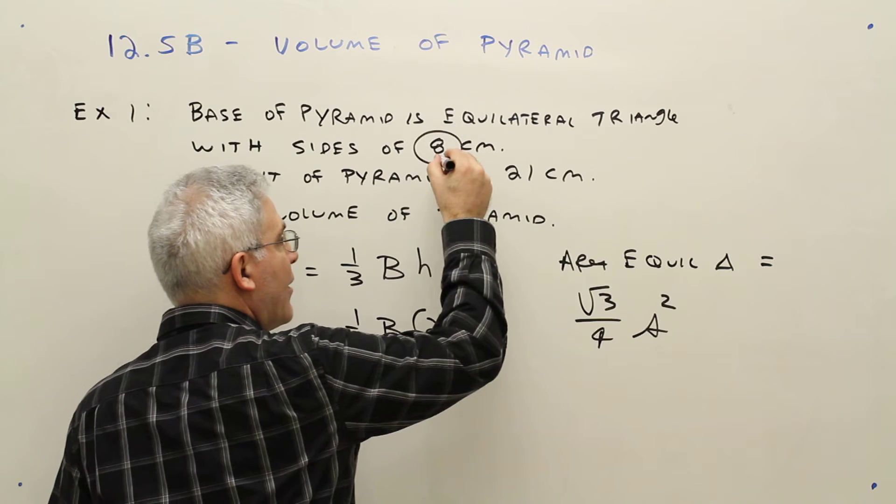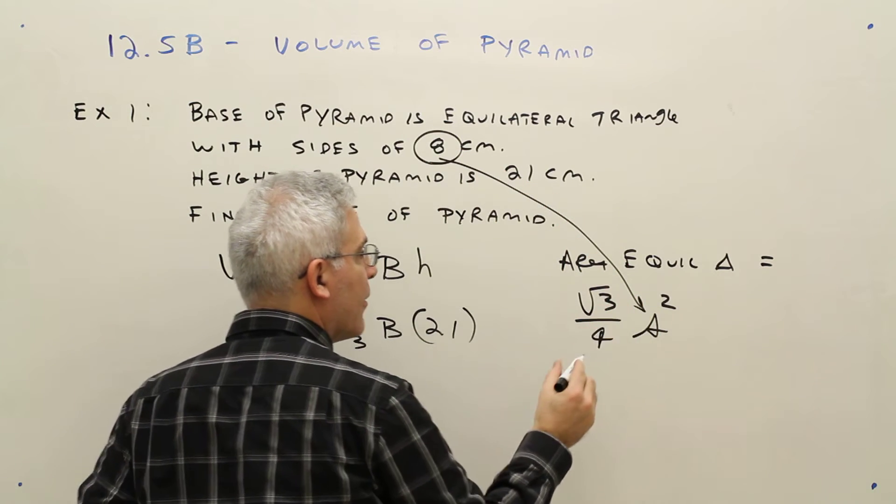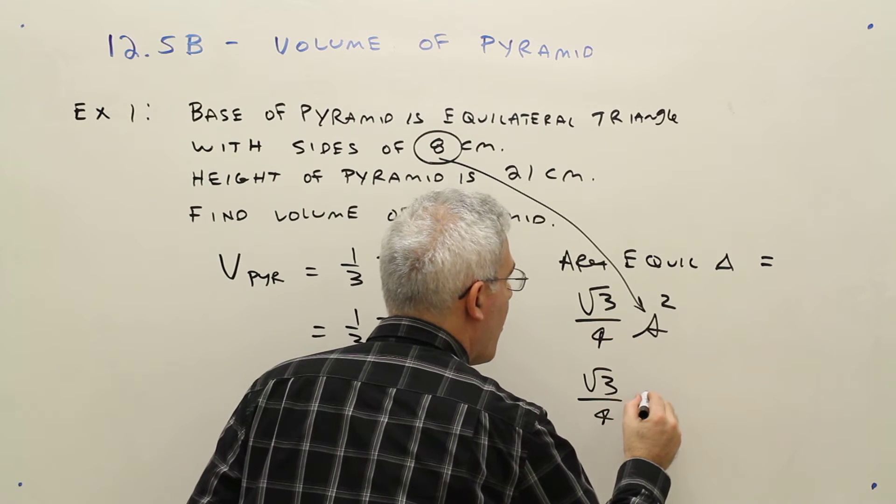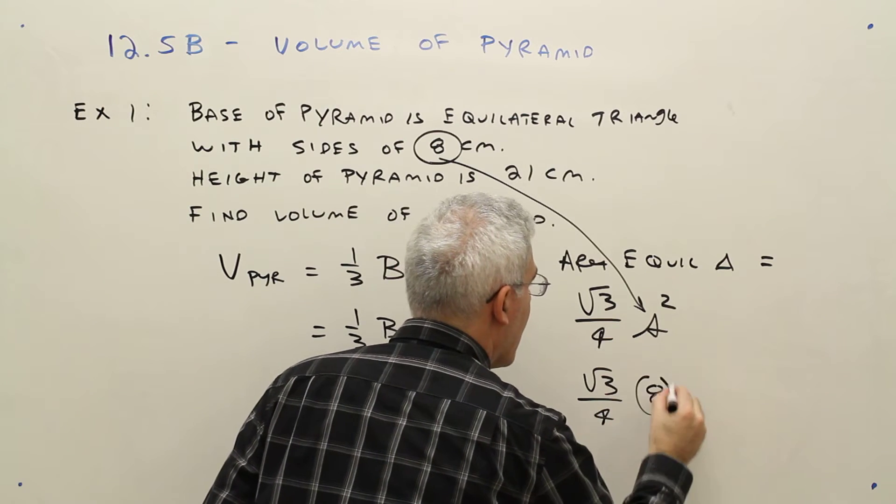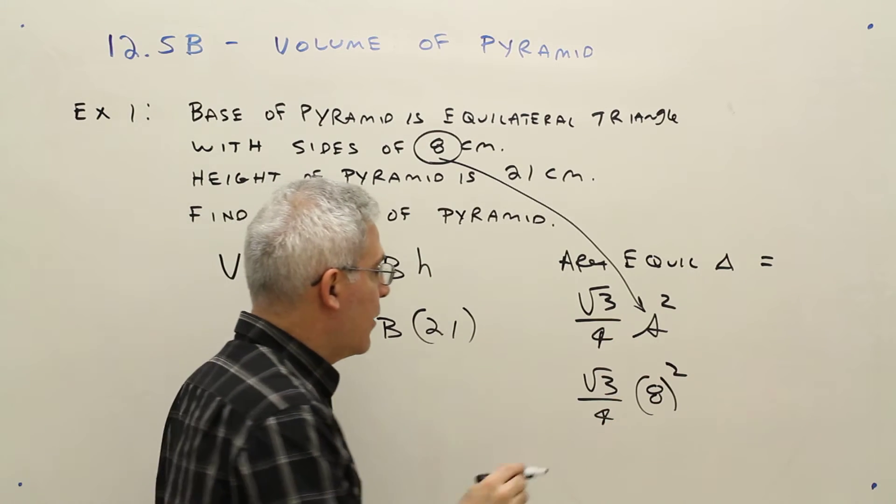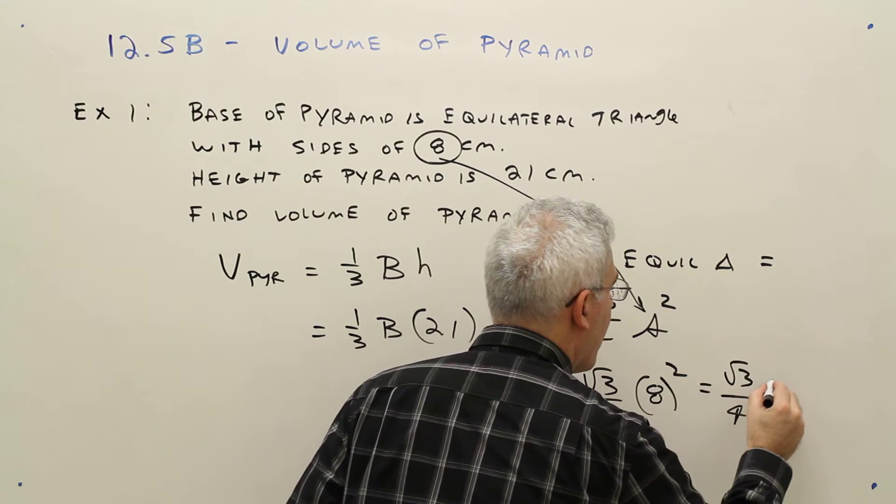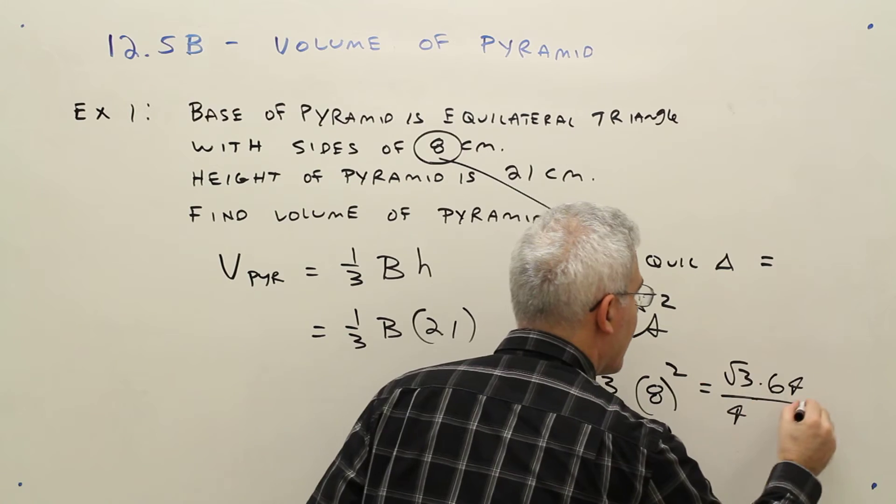Our side length was 8, so I'll just put that down there. So that's going to be the square root of 3 over 4 times 8 squared. So that's going to be the square root of 3 over 4 times 64.